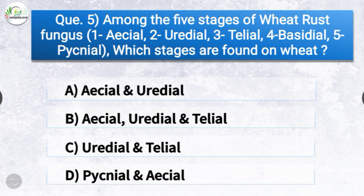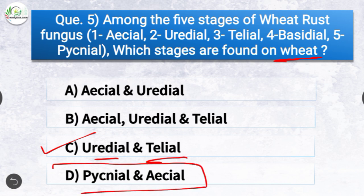Question number five: Among the five stages of wheat rust fungus — aecial, uredial, telial, basidial, pycnial — which stages are found on wheat? The options are aecial and uredial, uredial and telial, or pycnial and aecial. The correct answer is option C, uredial and telial. Among the five stages, the uredial and telial stages are found on wheat, whereas pycnial and aecial stages are found on the alternative host, which is barberry.